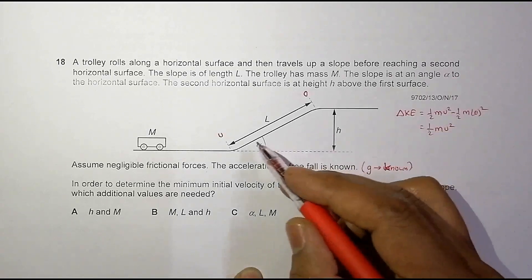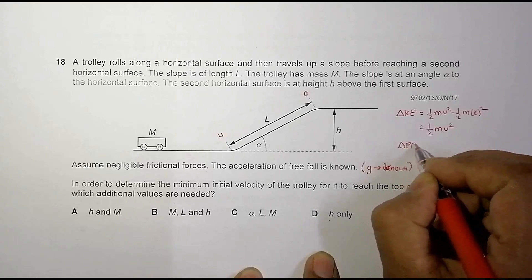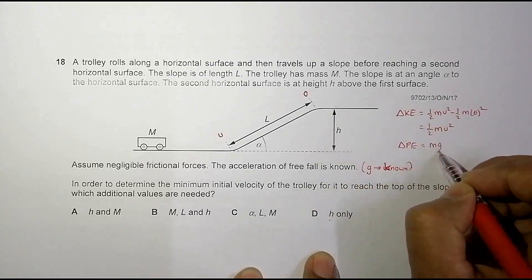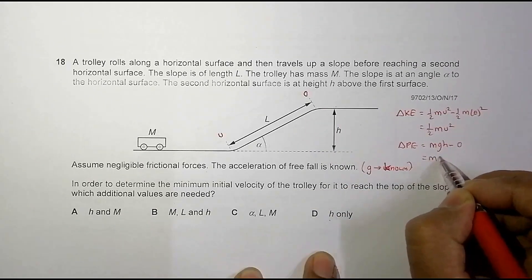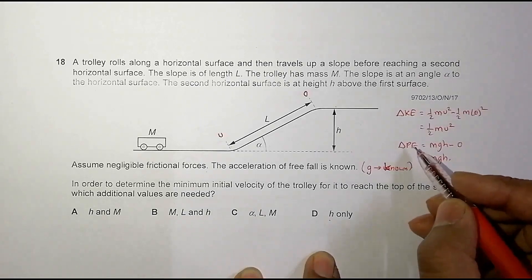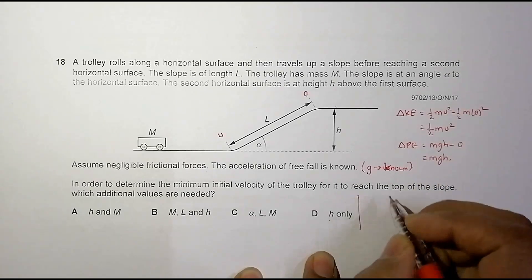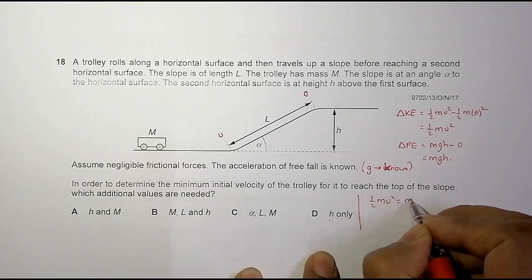This decrease in KE is used in increasing the potential energy, which equals MGH minus zero, equal to MGH. Since there is no friction, no other energies need to be considered. According to the principle of conservation of energy, these two should be equal. So we have 1/2 MU squared equals MGH.